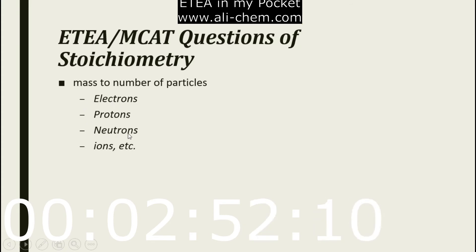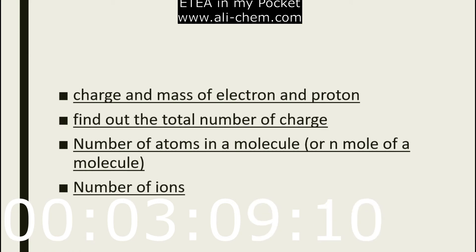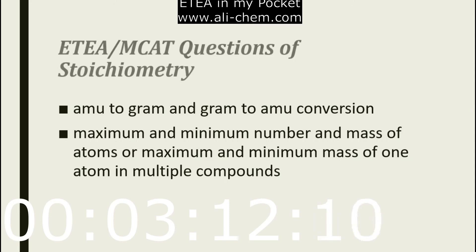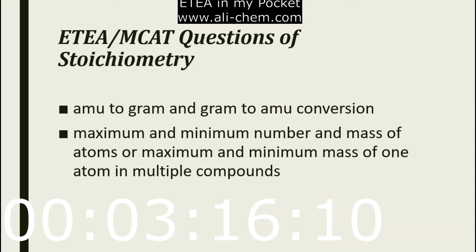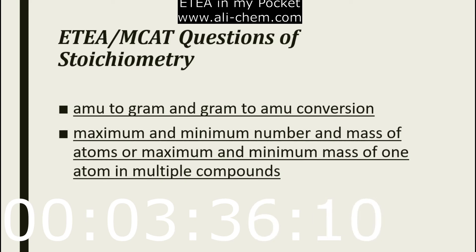There are various types of questions involving number of particles — for example, finding the number of protons, number of neutrons, number of ions in a compound or substance, the charge and mass of an electron and proton, total number of charges, number of atoms in a molecule or n moles of a molecule, number of ions in a compound or substance, and AMU-to-gram and gram-to-AMU conversions. There are also questions about maximum and minimum number of mass of an atom in a compound or multiple compounds.